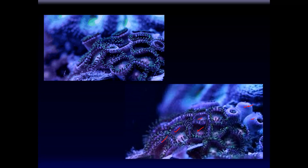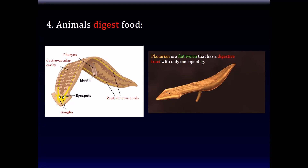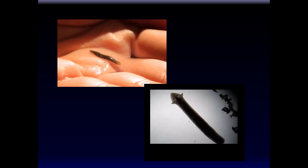Even simple organisms like these must obtain food from other living things. The fourth characteristic of all animals is that they must digest food. Once they obtain the food, they must digest it, so one quality of all animals is that they have some form of gastrointestinal tract or digestive mechanism. This flatworm, considered one of the more primitive living things, has a digestive tract with only one opening — the mouth serves as both entrance and exit — and food is digested in this vast network of the gastrovascular cavity. All animals must have a way of digesting their food.